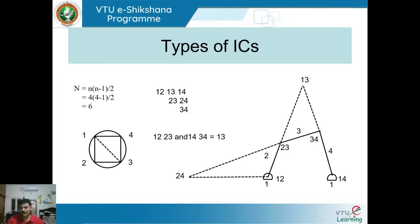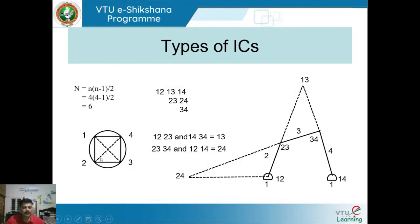To find IC 2,4: draw the diagonal connecting 2 to 4. This diagonal has triangles on both sides — one with ICs 2,3 and 3,4, and the other with ICs 1,2 and 1,4. Extend the line through ICs 2,3 and 3,4, and extend the line through ICs 1,2 and 1,4. Where these two lines meet is the instantaneous center 2,4.